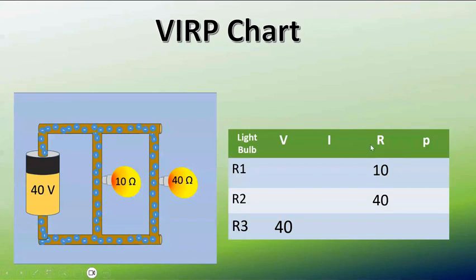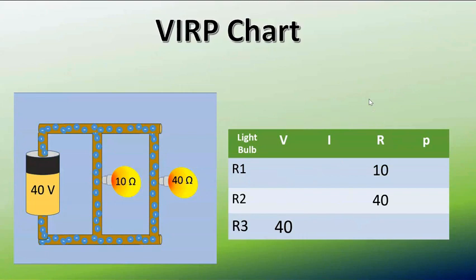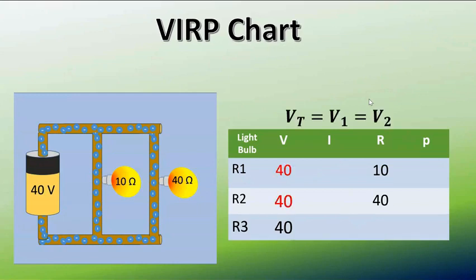So here's the VIRP chart on the right. V is for voltage, I is for current, R is for resistance, and P is for power. On the rows we can use any of our formulas that we saw earlier in the slideshow, but up and down vertically we have to use the formulas I just showed you. The first thing we'll notice is that the total voltage and the voltage of each light bulb are the same. That only happens in parallel circuits, so we put our 40s right there for R1 and R2.